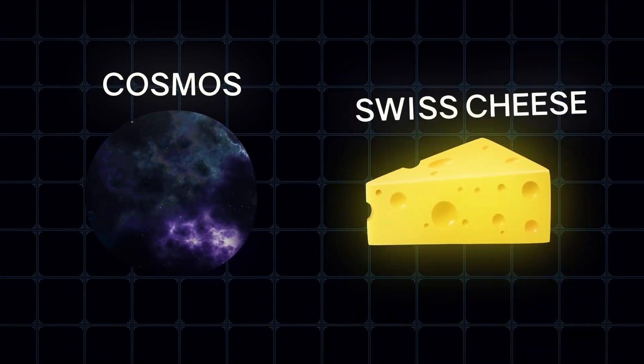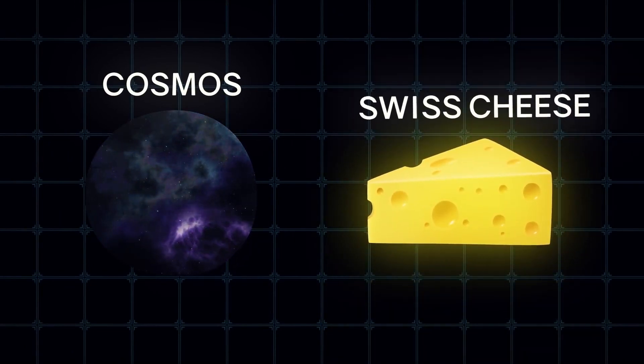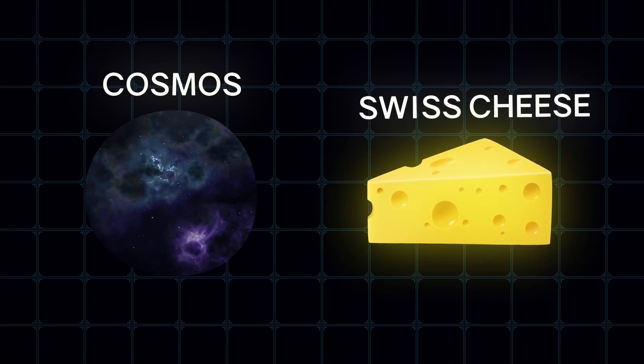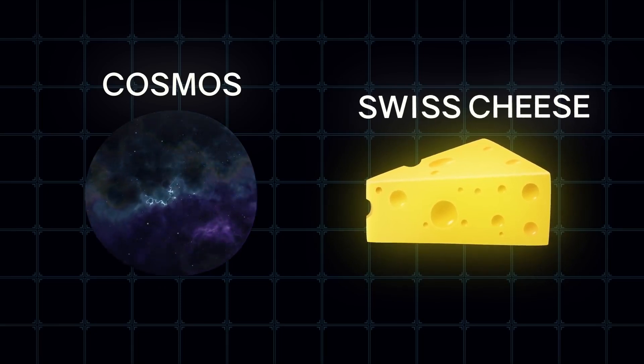The cosmos was compared to Swiss cheese by the physicist. Supernova explosions puncture holes in the cosmos, and new stars are forming on the edges of the holes made by dying stars.